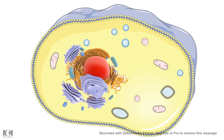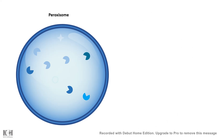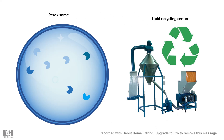If you consider our cell to be a factory, then the peroxisome inside the cell — which is basically a microbody and cell organelle — is compared to the recycling center of the cell. Just like a recycling center recycles important stuff and gets rid of unnecessary stuff, the peroxisome is used for similar purposes. In this video, we will look at the structure, function, and molecular details of the peroxisome.